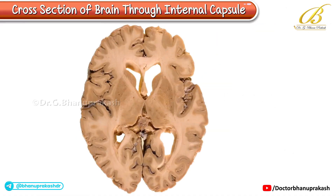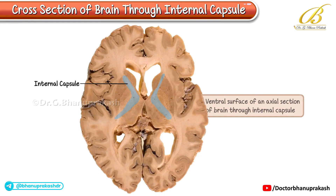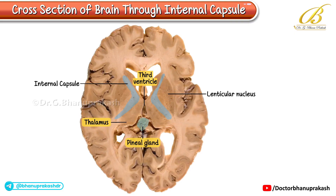The image showcases the ventral surface of an axial section of the brain through the internal capsule. Let's focus on identifying important structures such as the lenticular nucleus, thalamus, third ventricle, and the pineal gland.